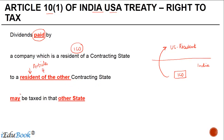The other contracting state may be taxed in that other state. What this means is that if an Indian company declares a dividend, it is not India which has an exclusive right to tax such dividend — such dividend can also be taxed in the US. Let me put in how this works in the case of the India-US treaty practically.